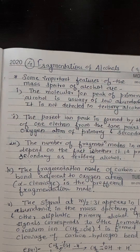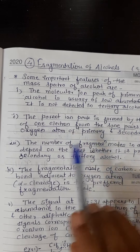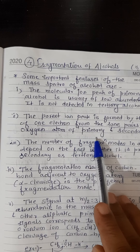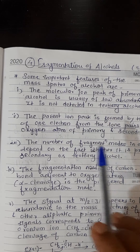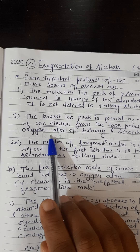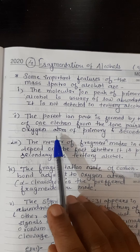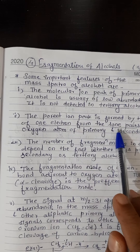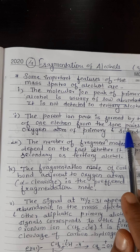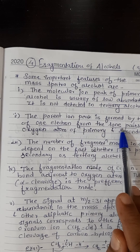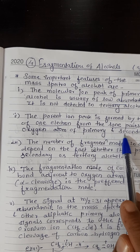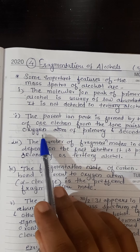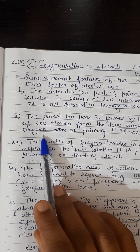No. 2: the parent ion peak is formed by the removal of one electron from the lone pair of the oxygen atom of primary and secondary alcohol. This means one lone pair of electrons is removed from the oxygen atom (the OH group) to form the parent ion peak.